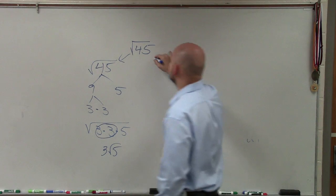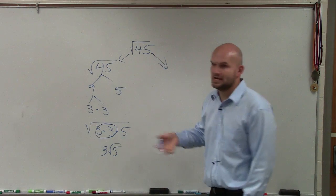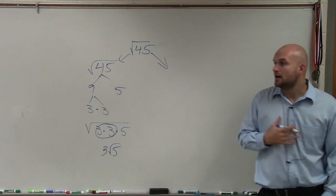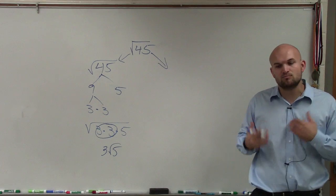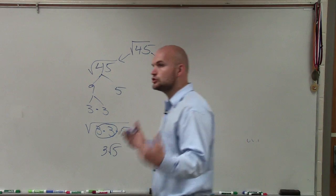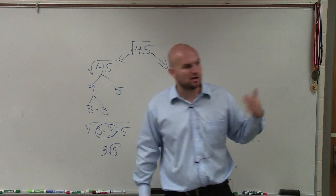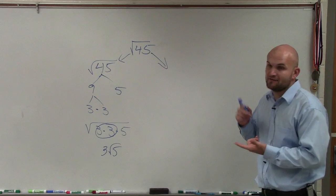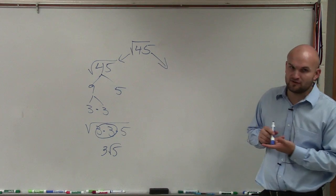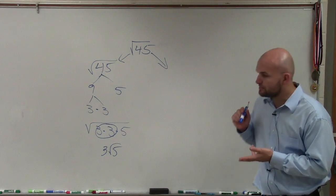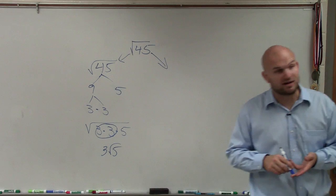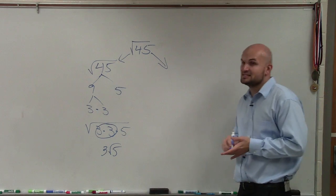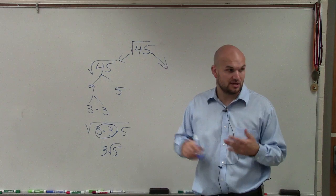The next method that we discussed was determining what is the largest square number that divides into 45. Our square numbers, the closest one we have is 36. 36 doesn't divide into 45 evenly. Then we go into 25. 25 doesn't divide into 45 evenly. 16 does not divide into 45 evenly. Then we have 9.